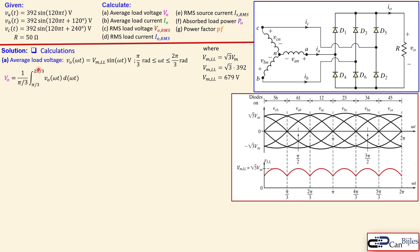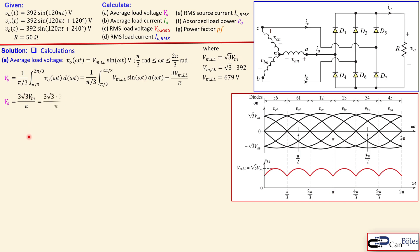We calculate the average voltage using one over the period — in this case π/3 — and integrate between the lower and upper limits. Substituting the load voltage expression and calculating symbolically gives three times the line-to-line peak voltage over π. Substituting square root of three times the phase voltage gives us an average load voltage of 648.4 volts. The average load current is simply that value divided by the 50-ohm resistor, giving 12.97 amps.